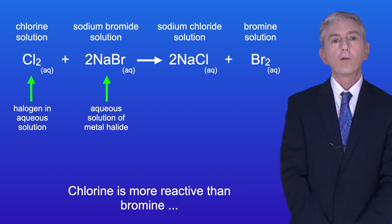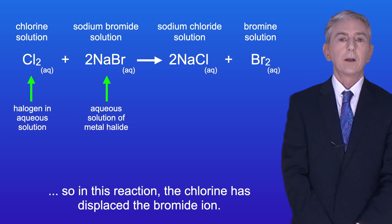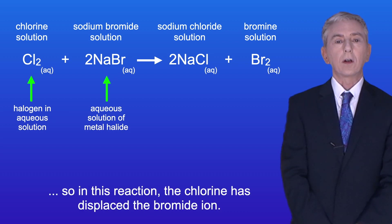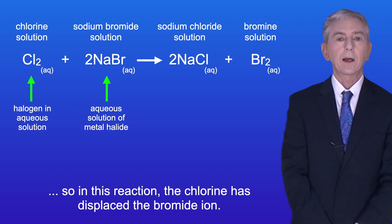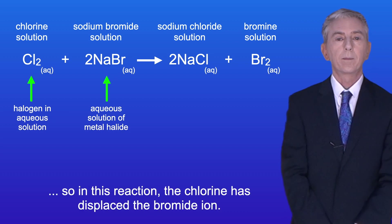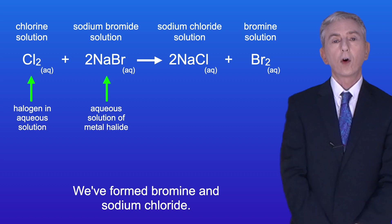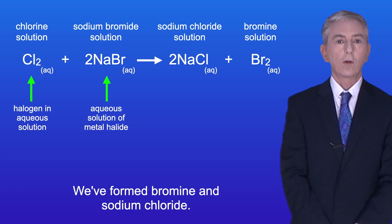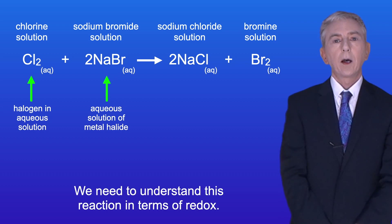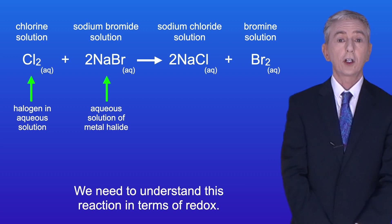Chlorine is more reactive than bromine so in this reaction the chlorine has displaced the bromide ion. We formed bromine and sodium chloride. Now we need to understand this reaction in terms of redox.